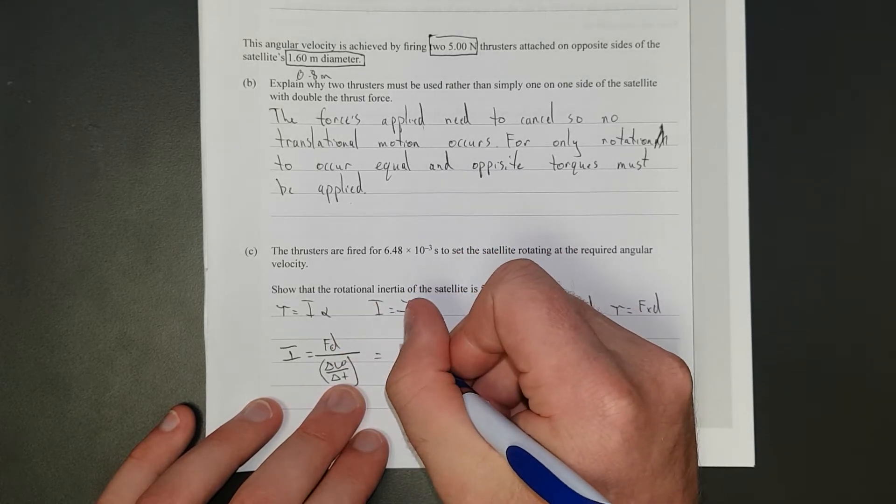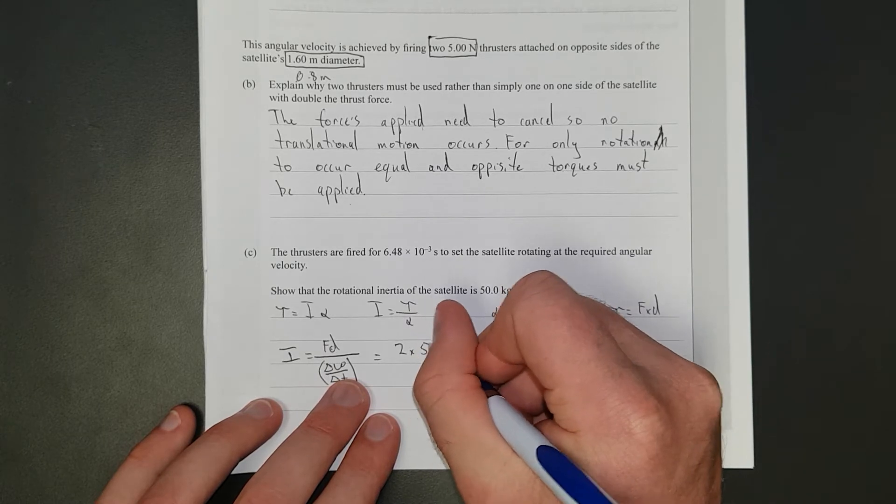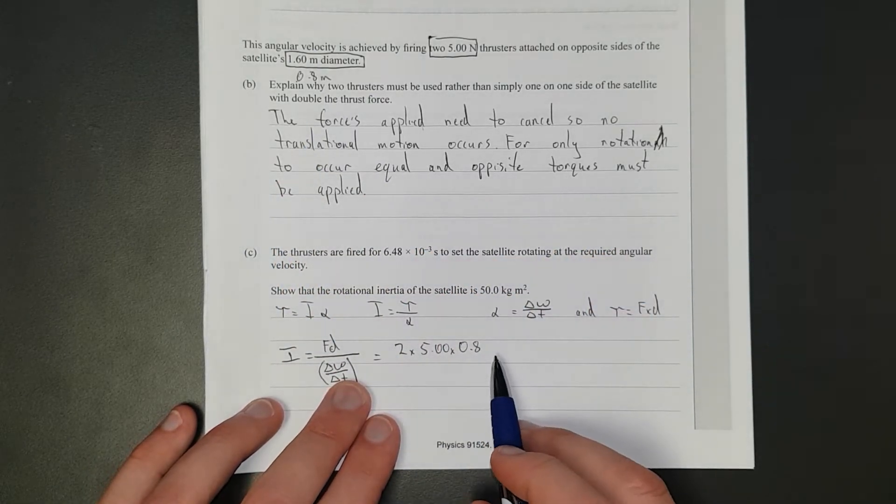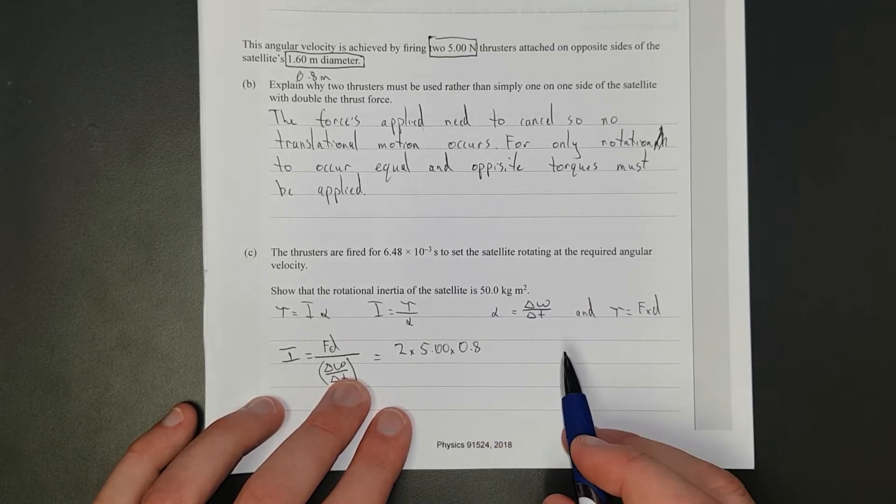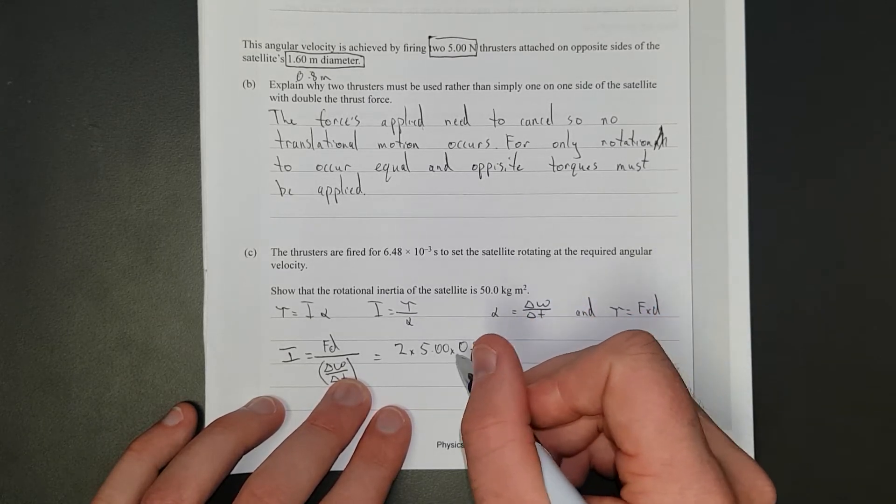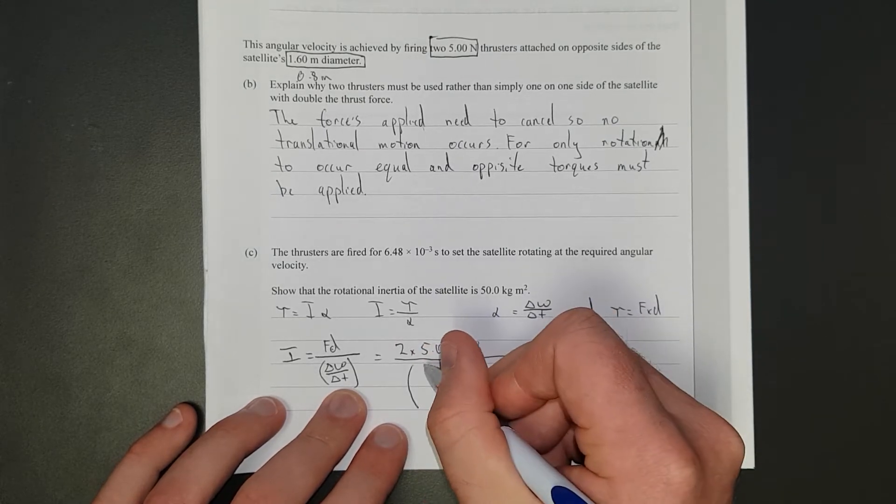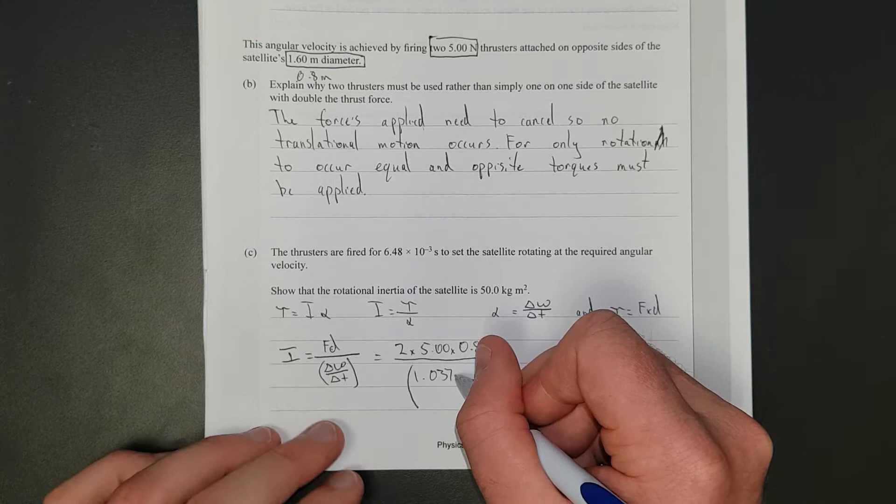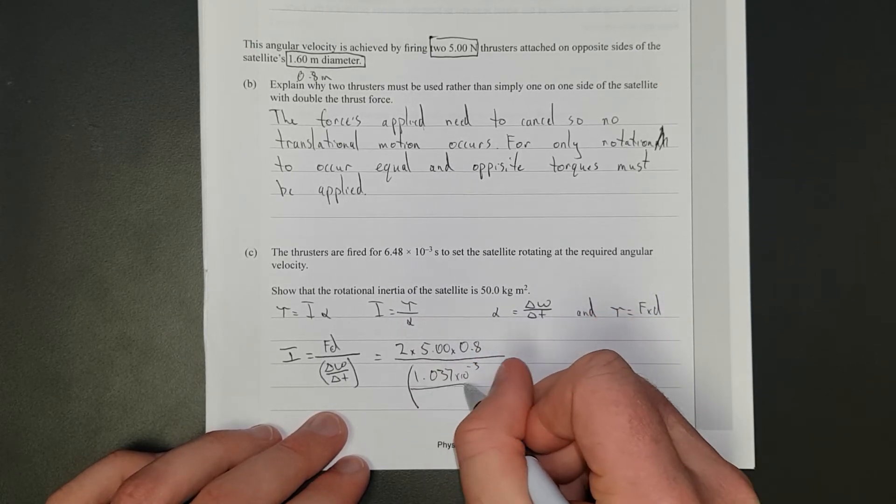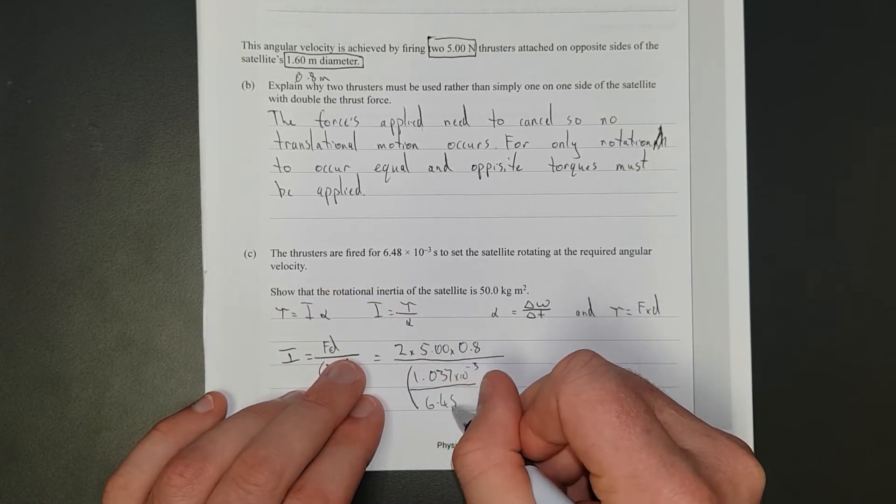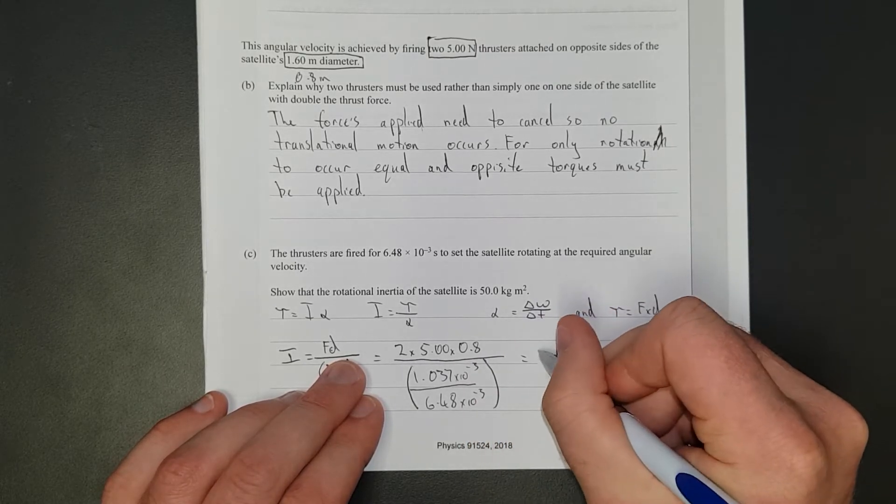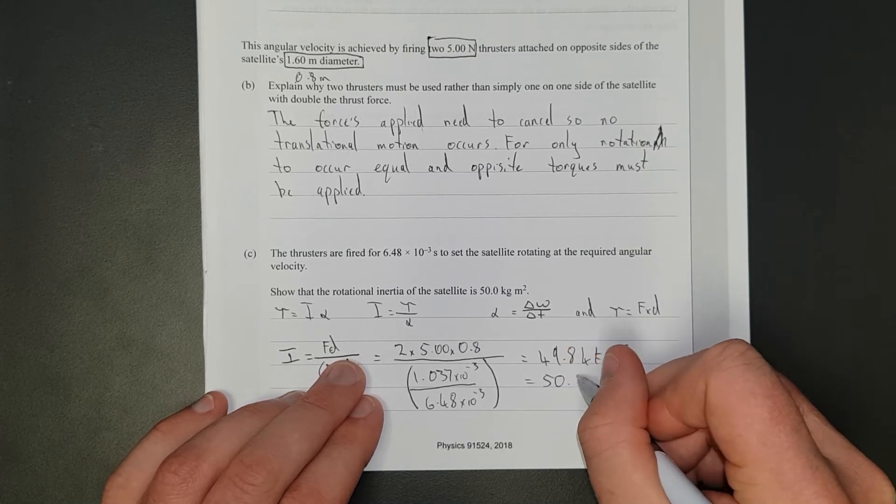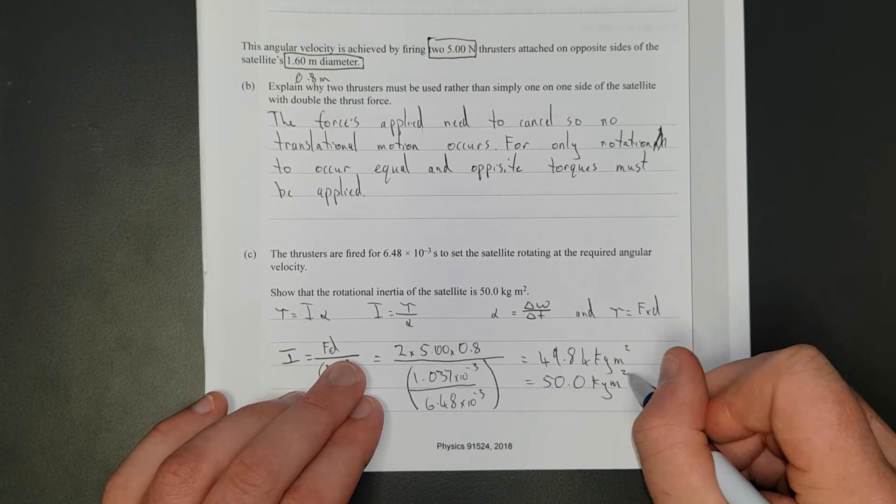So, I'll just write this out fully. We have two rockets. So, I'm going to go two times, what's the force? Five newtons times, how far away from the center? Zero point eight. That's what would trip a lot of people, that would trip me up to begin with. And I was thinking that's not right. I've got a hundred. So I had to go back and figure out what I did. Times point eight. And that's us. It's divided by 1.037 times 10 to the negative 3 divided by 6.48 times 10 to the negative 3. And that equals 49.84 kilogram meters squared, which is basically equal to 50.0 kg meters squared. Look at that. The answer.